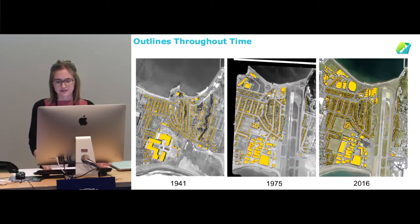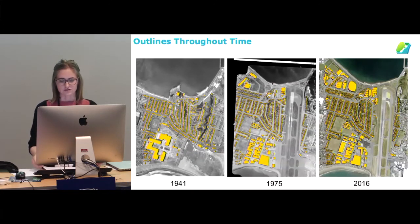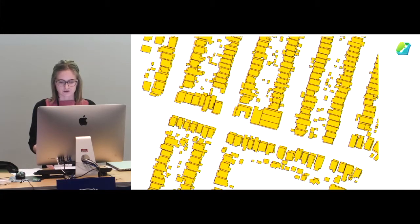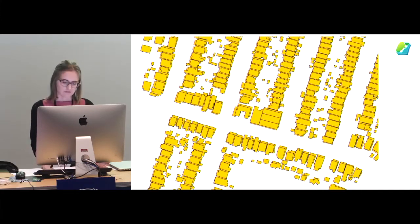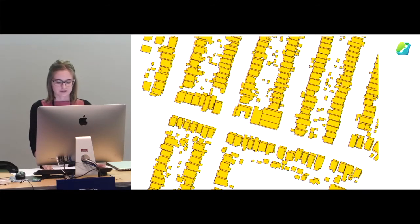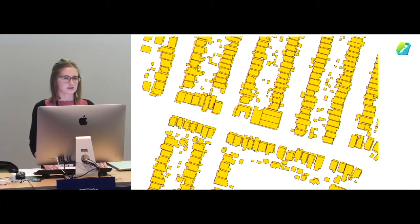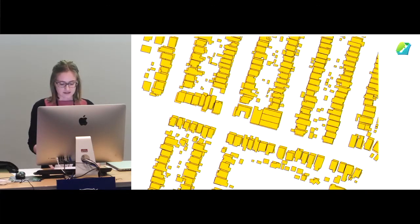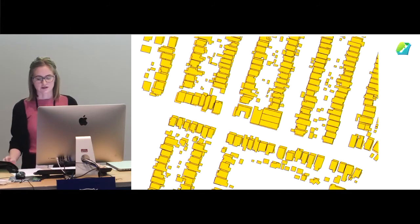Looking at those three images, you can see that if we were to just take the data we've received and merge it, there'd be quite a few issues. It also shows that when we say 2.8 million building outlines, that doesn't reflect the total amount captured, as some have been captured two or three times. To future-proof our dataset and always provide users with the most recent outlines while maintaining a persistent building outline ID, we had to come up with extra steps in our QA process.